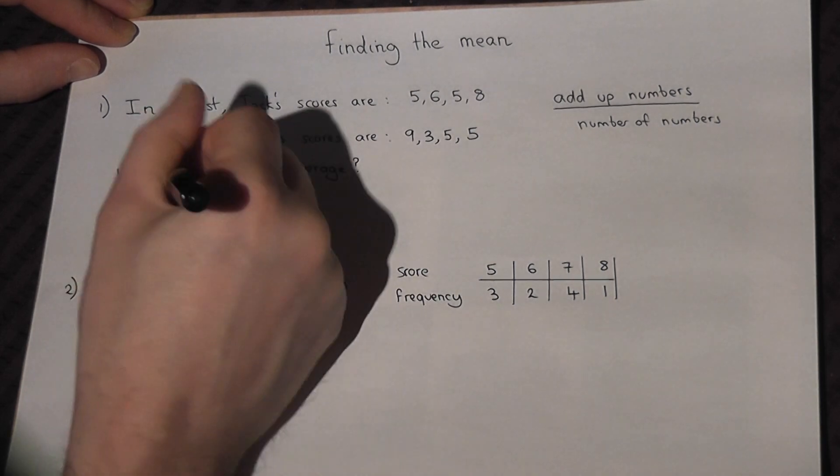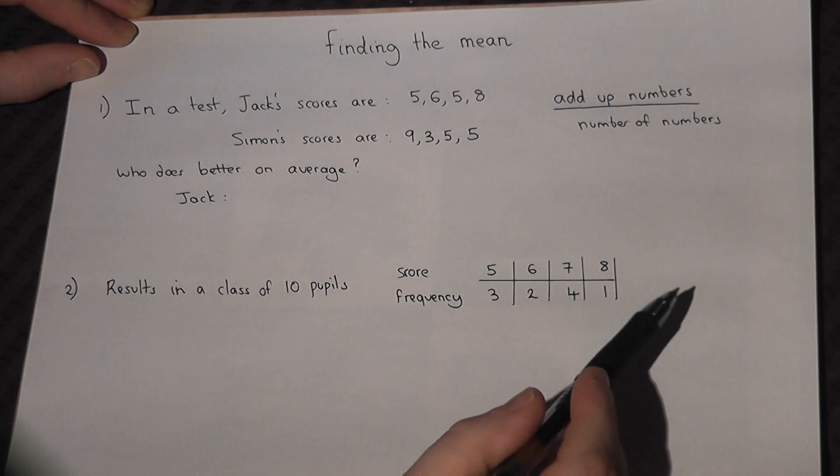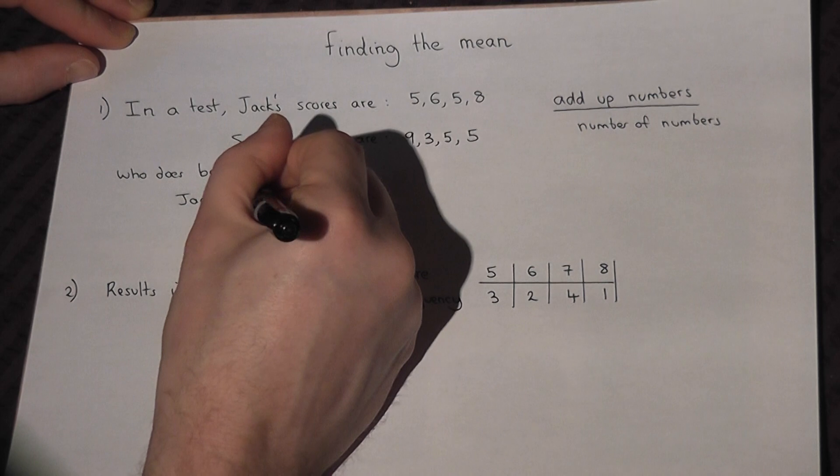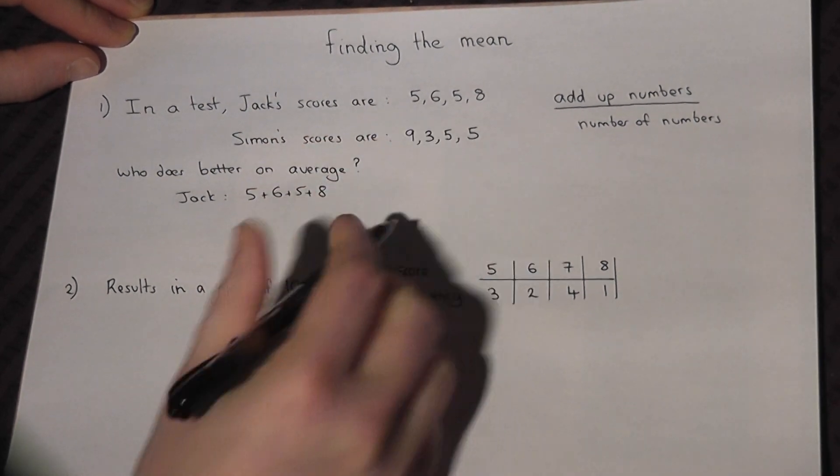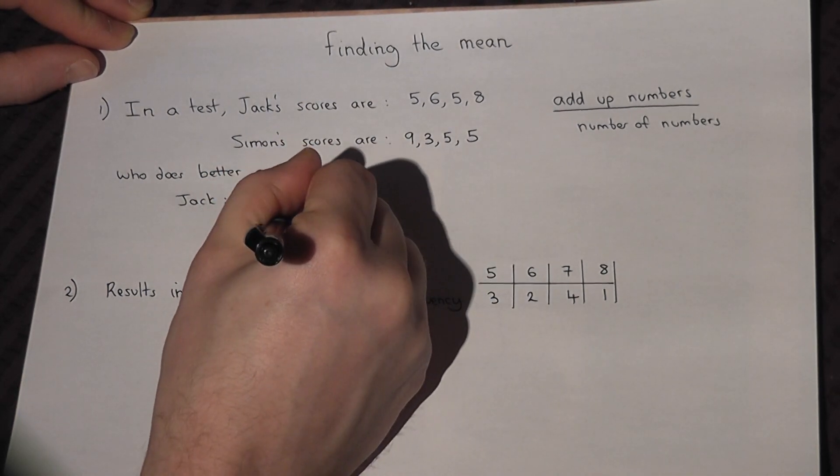For Jack's average, he's got four scores, so we do 5 plus 6 plus 5 plus 8. There are four scores there, so divide by 4.